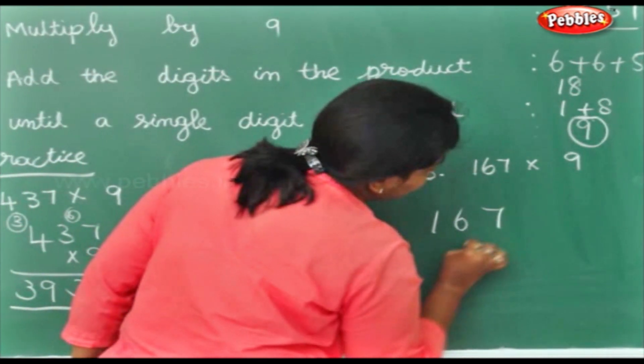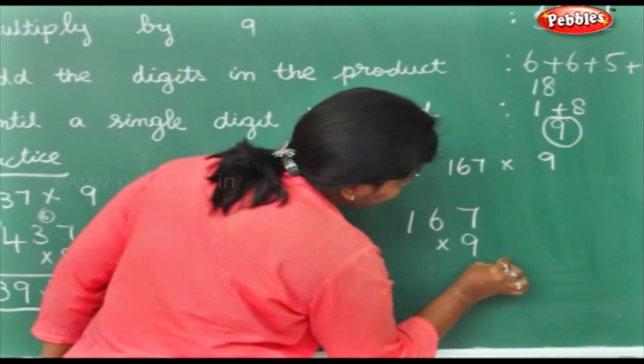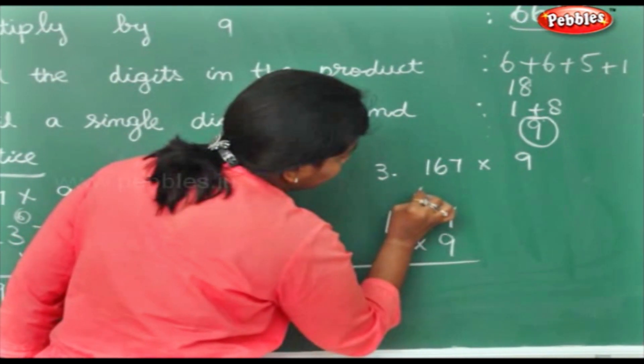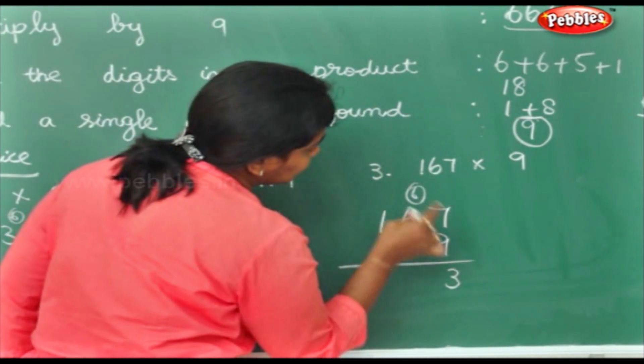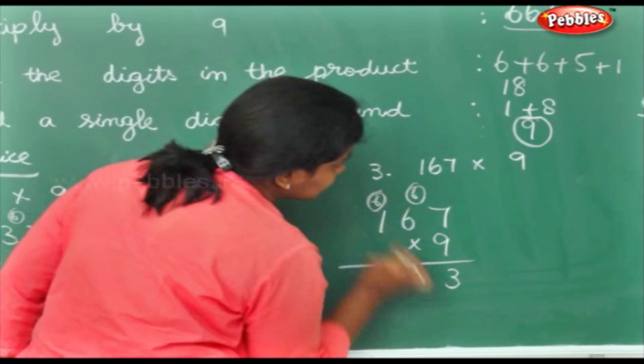Here, 167 into 9. 9 7's are 63. 9 6's are 54. 54 plus 6 is 60.